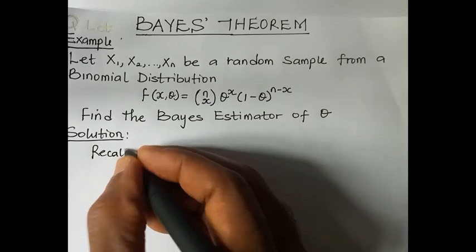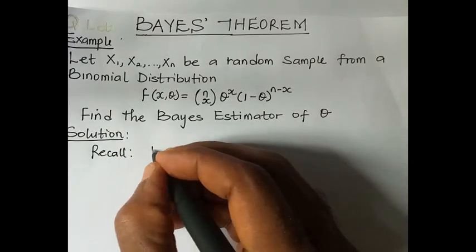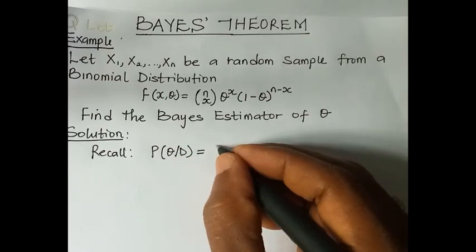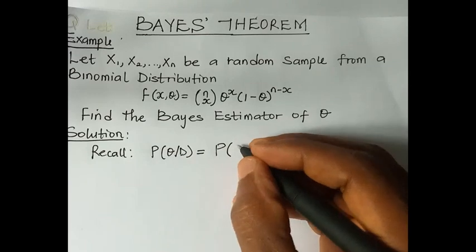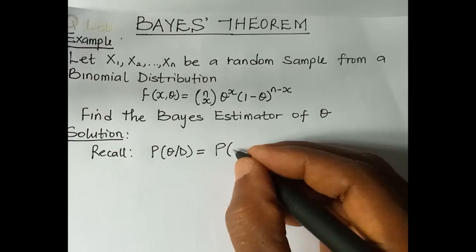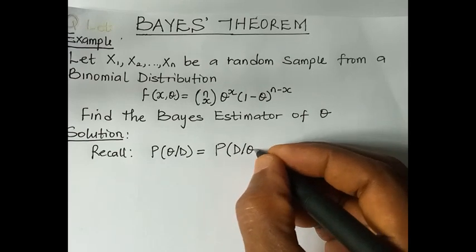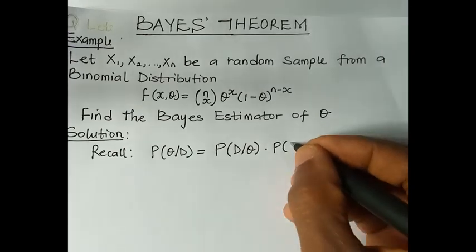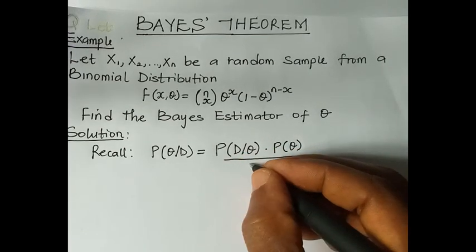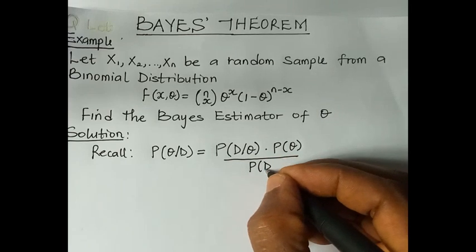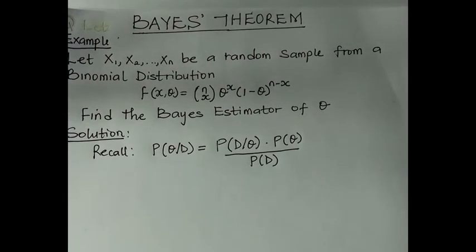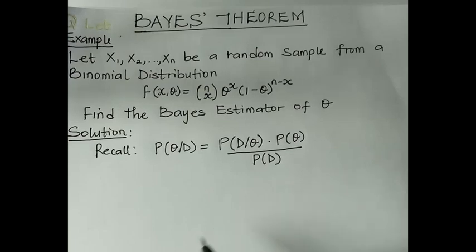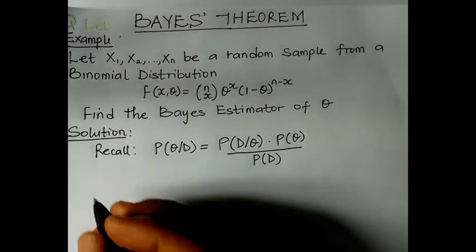First, recall from the definition that the posterior probability is equal to the probability of the distribution given theta, multiplied by the probability of theta (the prior), all over the marginal distribution. Knowing this, the next step is to identify our prior distribution.